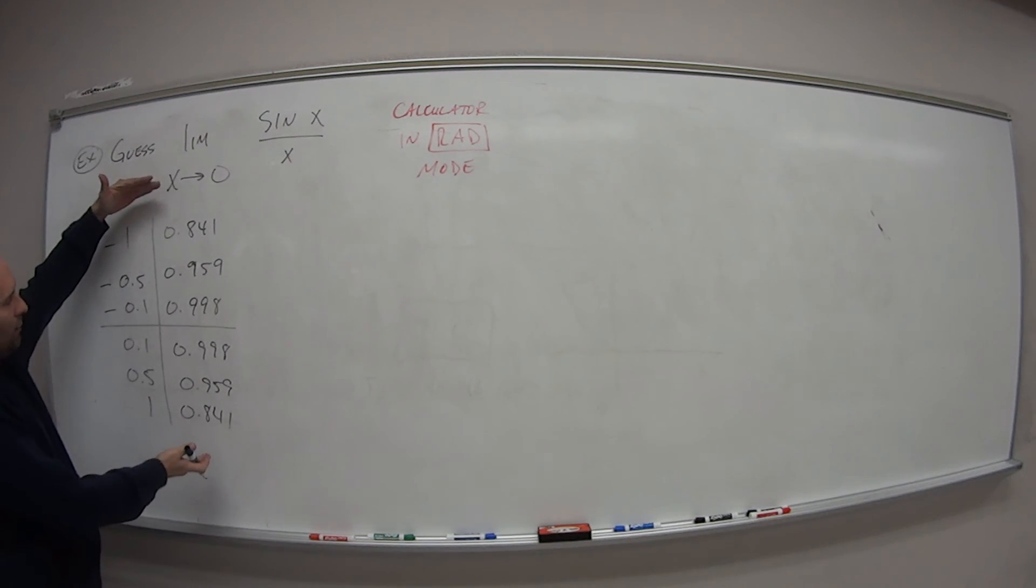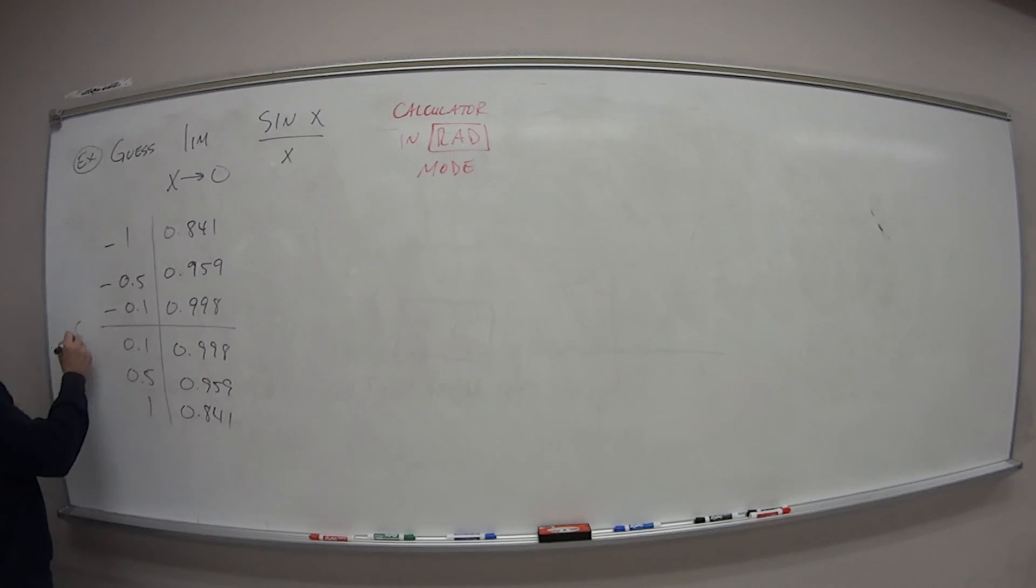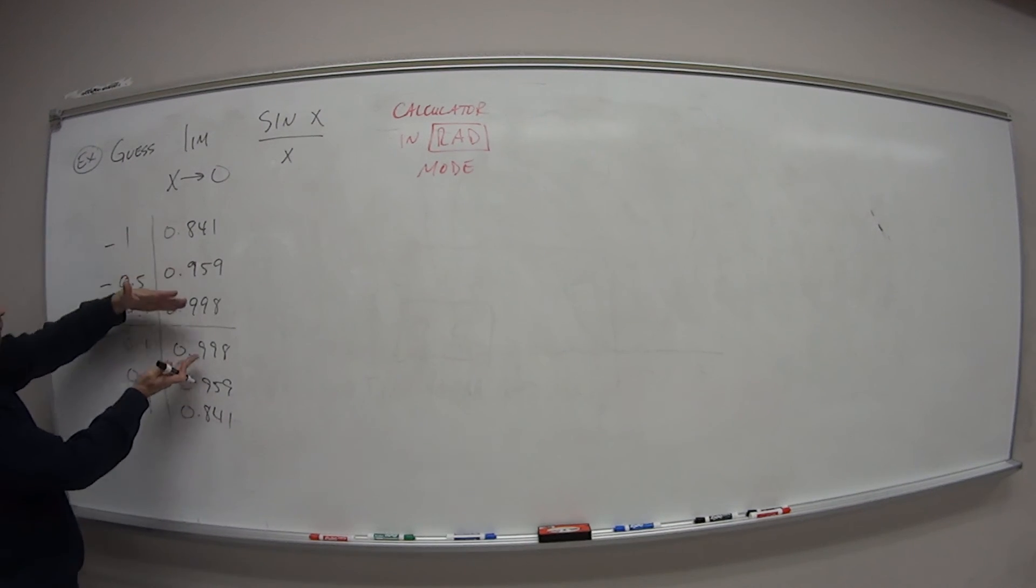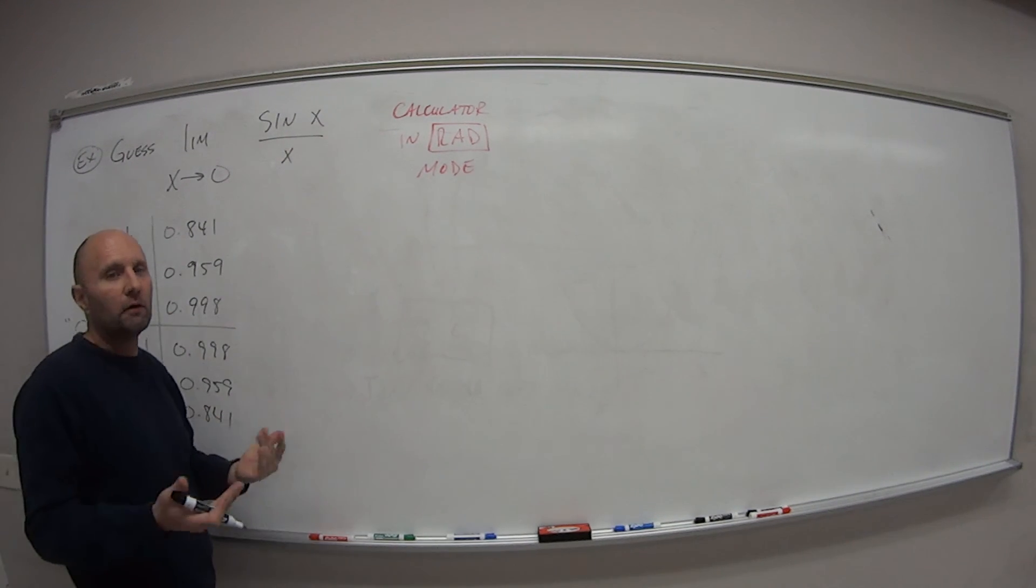So looking at the table, as we get closer and closer, if we call this 0, what value do we get closer and closer to? 1, right?